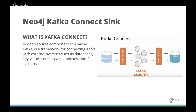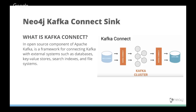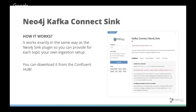The Kafka Connect sink uses Kafka Connect, an open source component of Apache Kafka that connects Kafka to different data sources. The Neo4j Kafka Connect sink works in exactly the same way as the Neo4j Streams plugin with a shared code base, but the key difference is that it must be installed into the Kafka Connect platform outside of Neo4j. You can download this plugin from the Confluent Hub.